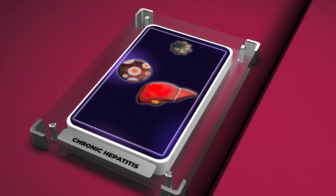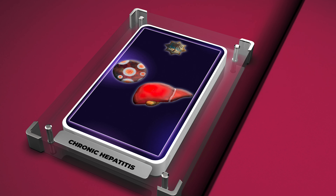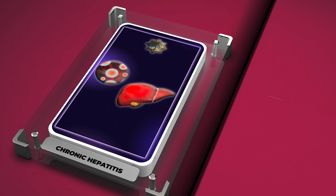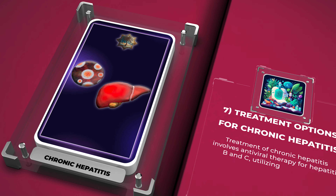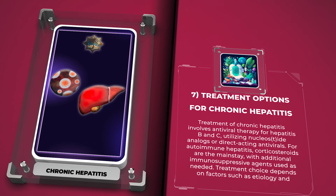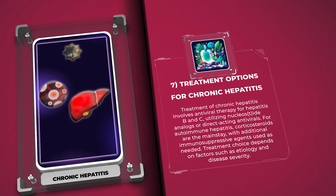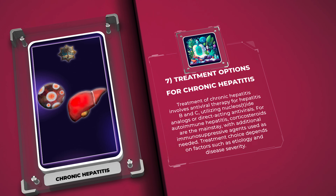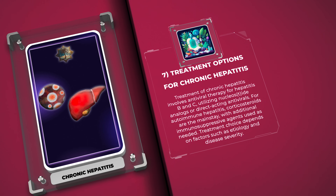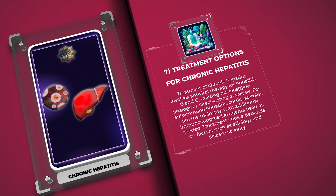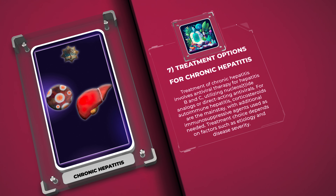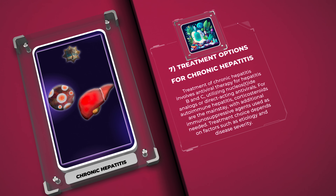Treatment of chronic hepatitis involves antiviral therapy for hepatitis B and C, utilizing nucleoside analogs or direct-acting antivirals. For autoimmune hepatitis, corticosteroids are the mainstay, with additional immunosuppressive agents used as needed. Treatment choice depends on factors such as etiology and disease severity.